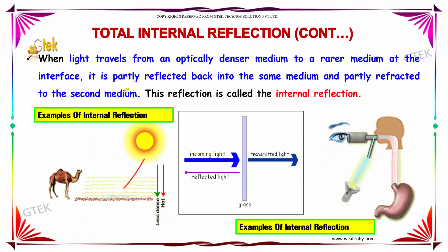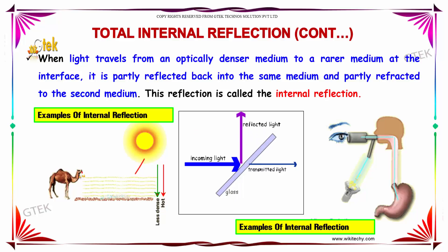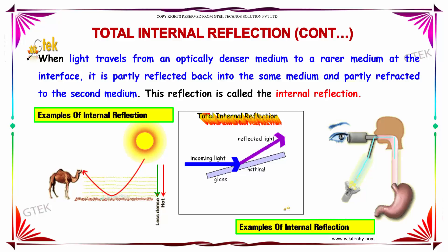When light travels from an optically denser medium to a rarer medium at the interface, it is partly reflected back into the same medium and partly refracted to the second medium. This reflection is called internal reflection.